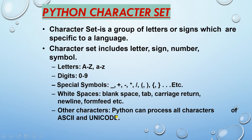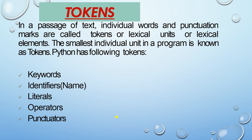So these are the character sets of Python. Next, what is a token? A token is any small individual unit in Python. Whatever text, individual words, or punctuation marks are there, it is called a token. In tokens we have the following: keyword, identifiers, literals, operators, and punctuator.